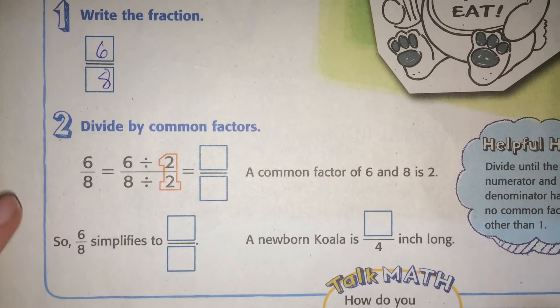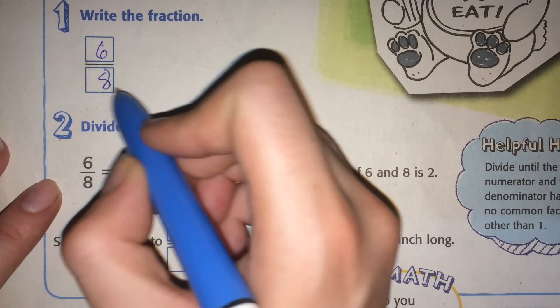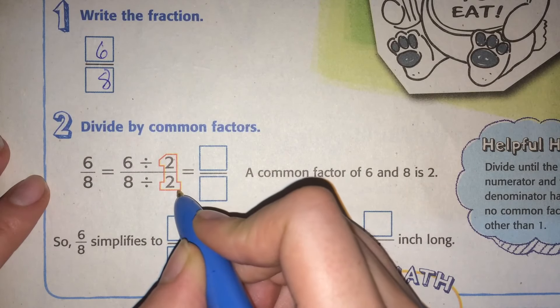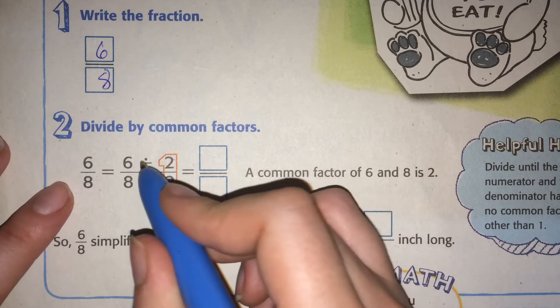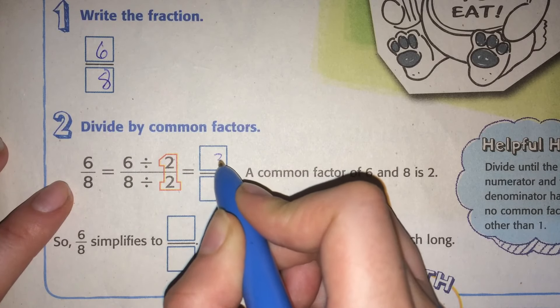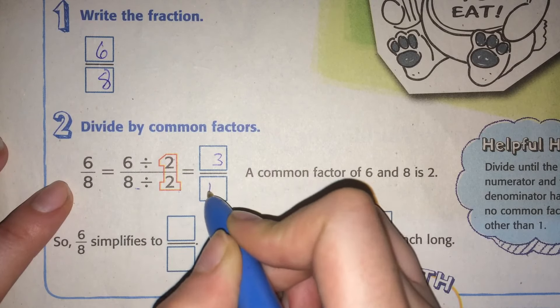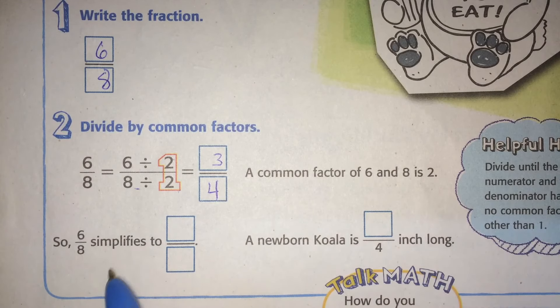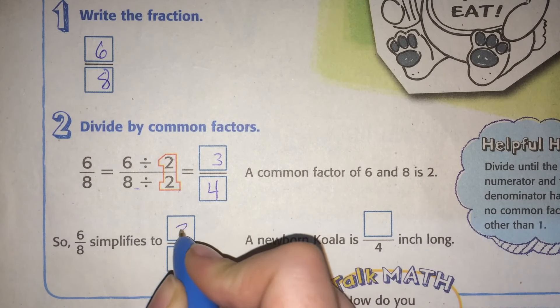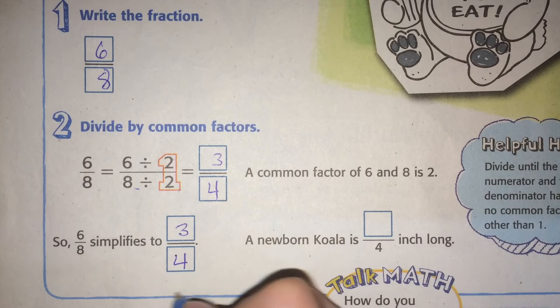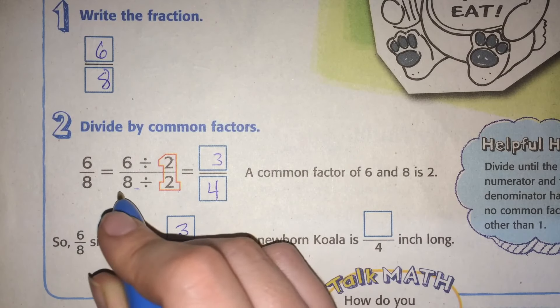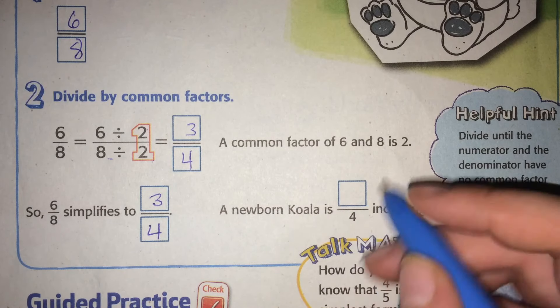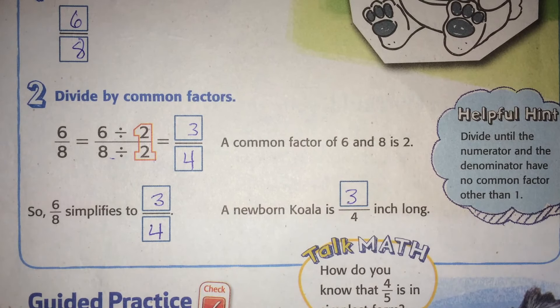And we're going to divide by the common factor. Well, the only thing that these both can be divided by is 2. So remember, top and the bottom. You've got to divide by the same thing. So 6 divided by 2 is 3, and 8 divided by 2 is 4. So 6 eighths simplifies to 3 fourths. This is the original fraction. This is the fat cat fraction. A newborn koala is 3 fourths inches long.